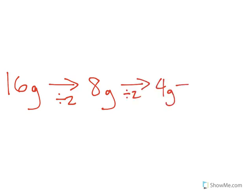So let's start out. 16 grams. Let's divide that by 2. We get 8. We divide that by 2 again. We get 4 grams. Divide that by 2 again. We get 2 grams. And then one final time, we get 1 gram, which is what we were trying to get.